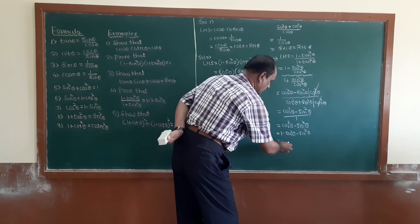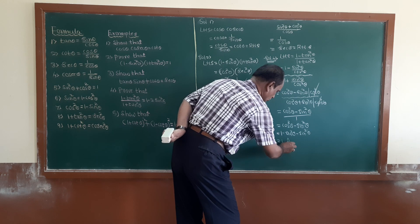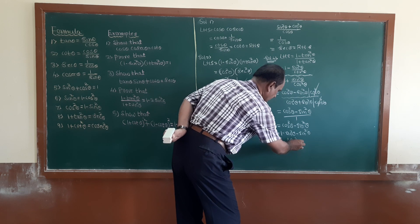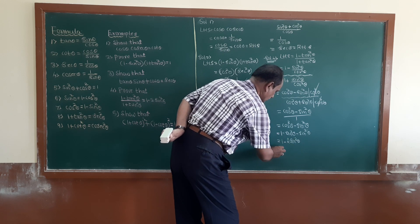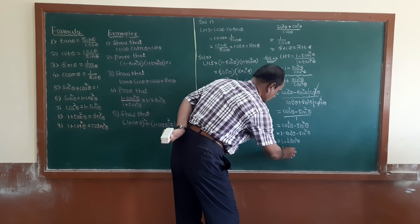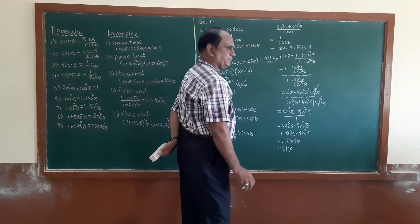Substituting cos squared theta equals 1 minus sine squared theta, we get 1 minus sine squared theta minus sine squared theta, which equals 1 minus 2 sine squared theta. So LHS equals RHS.